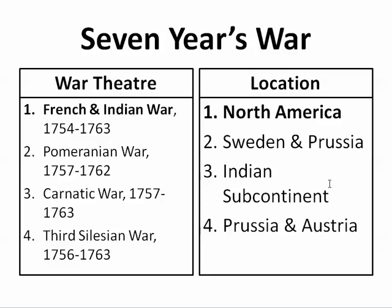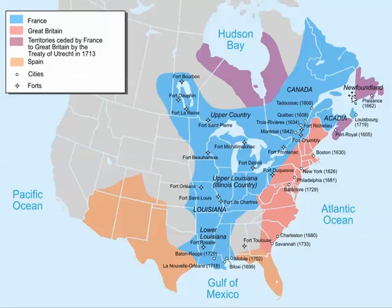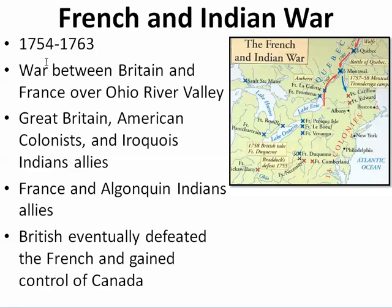Our standards are really concerned with number one — where it started — the French and Indian War in North America. We see this competition over land and resources between the French and the British. The French and Indian War lasts from 1754 to 1763. A lot of battles happen at Fort Duquesne, Fort Necessity, and Fort Cumberland. Many engagements happen along the St. Lawrence River and in the Northeast in the Great Lakes area. This war is between Great Britain and France over the Ohio River Valley.